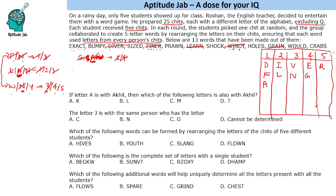Let's use the word PRAWN. R, A, N have been used in positions 5, 1, and 3 respectively. So P and W are in positions 2 and 4. Now W is either 4 or 5, so W is in 4. Y will be in 5, and since W is in 4, P will be in 2. So PRAWN has been used.